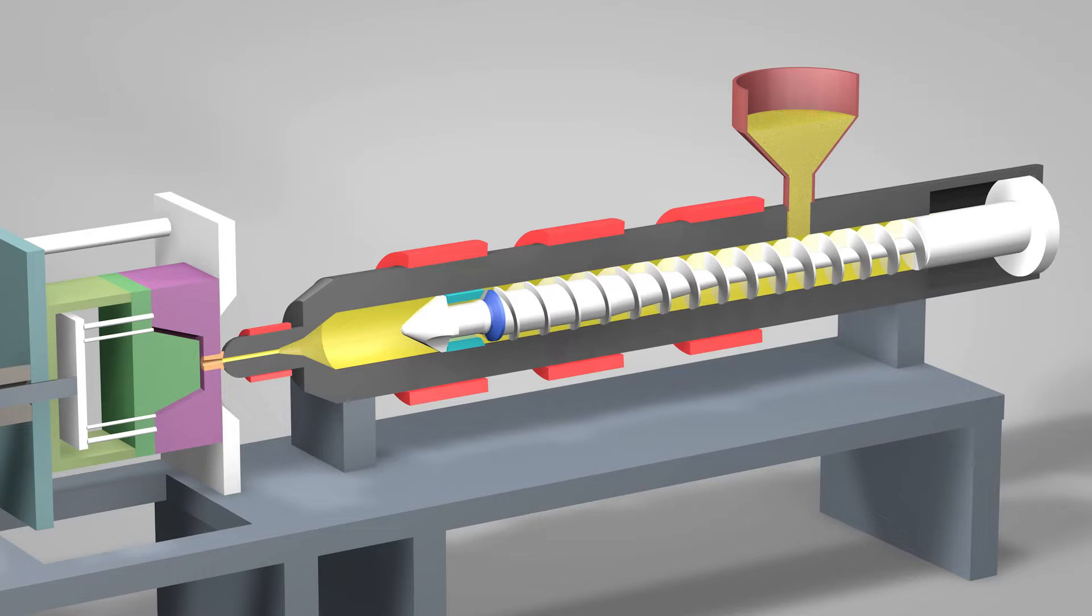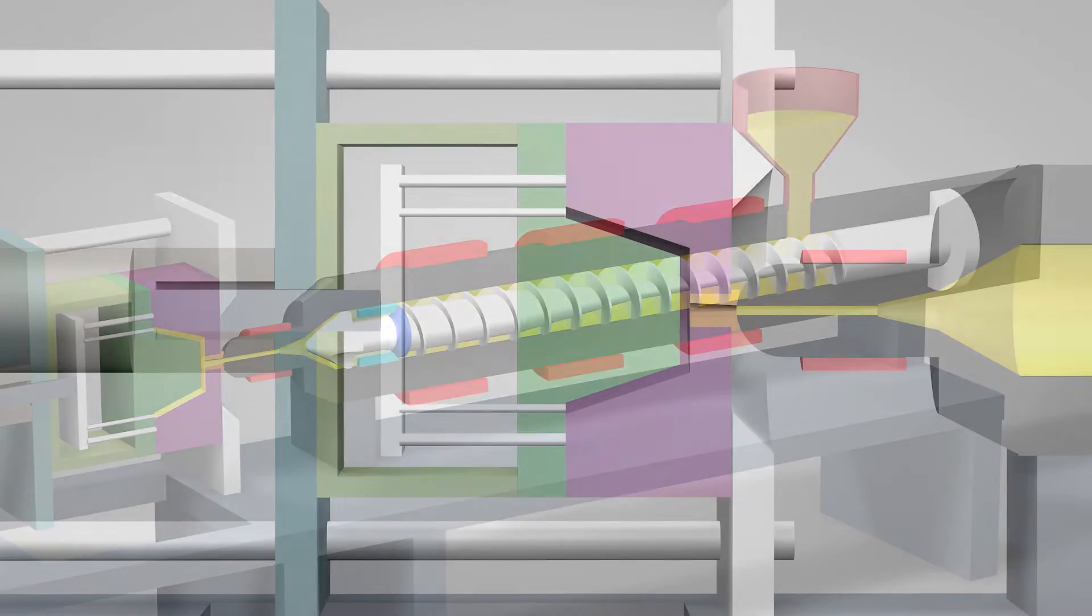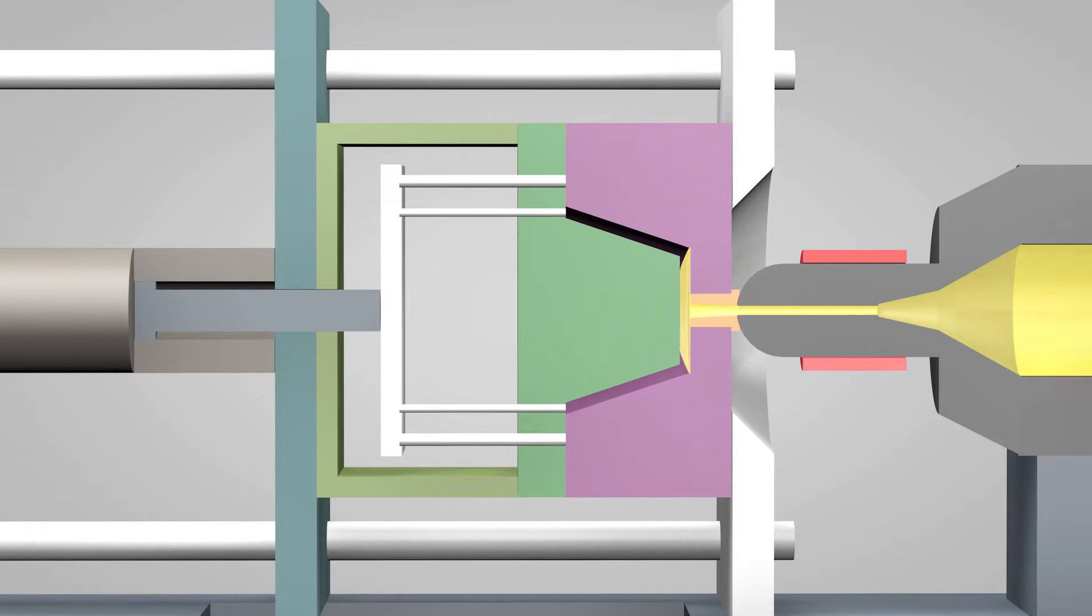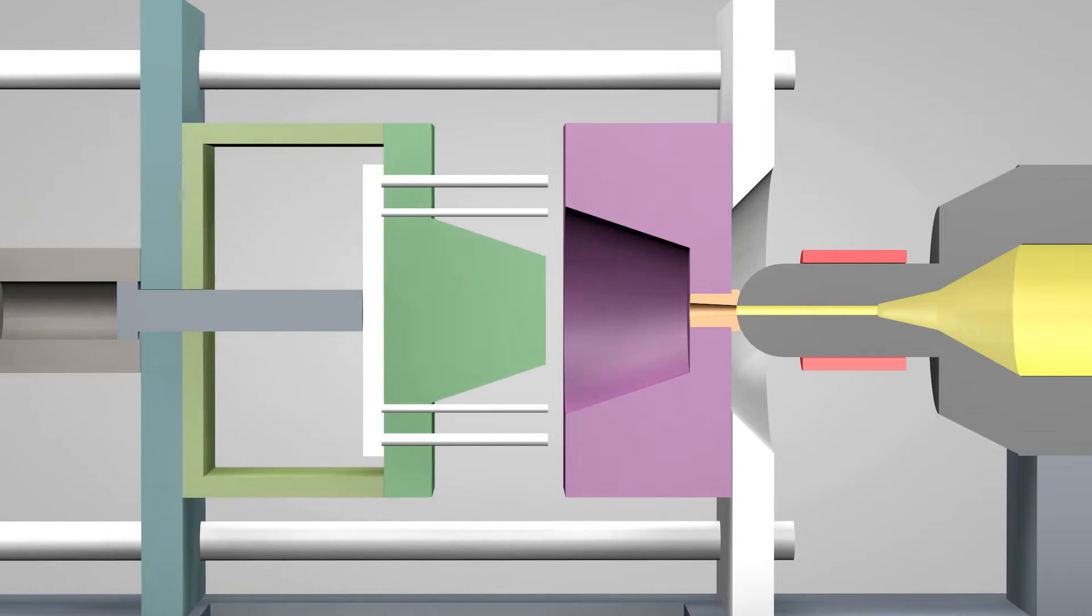Once enough molten plastic is in front of the screw, it ramps forward like the plunger of a syringe. In a matter of seconds, the screw injects the molten plastic into the empty part of the mold called the cavity image. The plastic solidifies in under a minute. The mold opens and the part is ejected. The mold then closes and the process repeats.